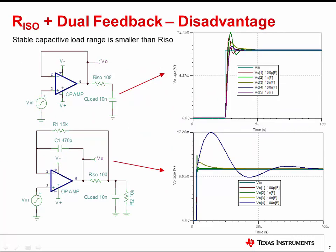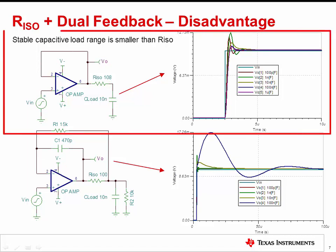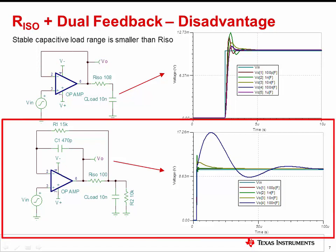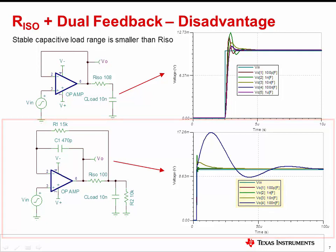While the R-ISO plus dual feedback circuit solves the DC accuracy issue with the R-ISO circuit, it has some disadvantages. An R-ISO circuit will generally remain stable with reasonable variation in the transient response over a wide range of capacitive loads. The R-ISO plus dual feedback circuit is not as tolerant to changes in output capacitance and can quickly become unstable. Therefore, it is best for situations where the output capacitance is known and will not vary significantly.